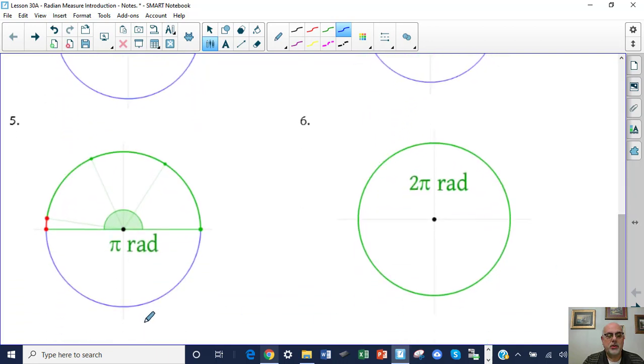A semicircle, 180 degrees, is three and a little bit radians, or pi. Pi is 3.14, so semicircle is 3.14 and change radians. An entire circle is two pi radians.